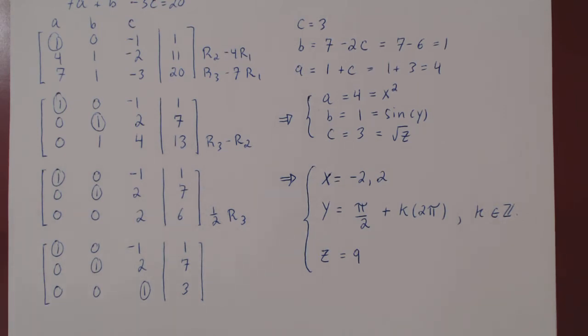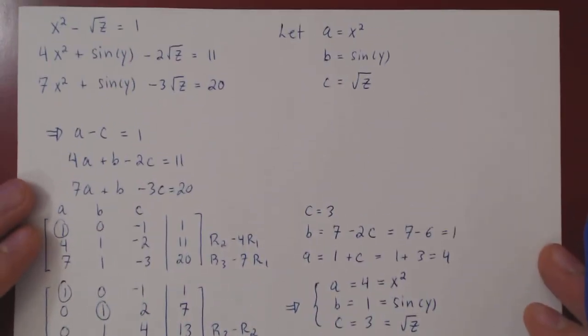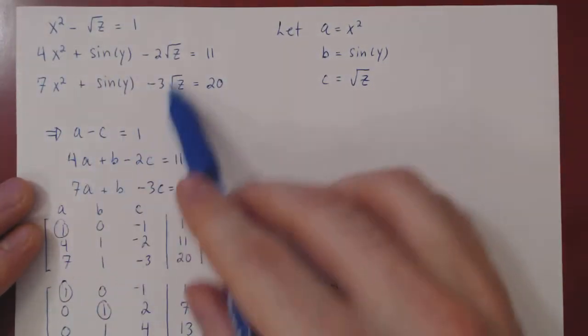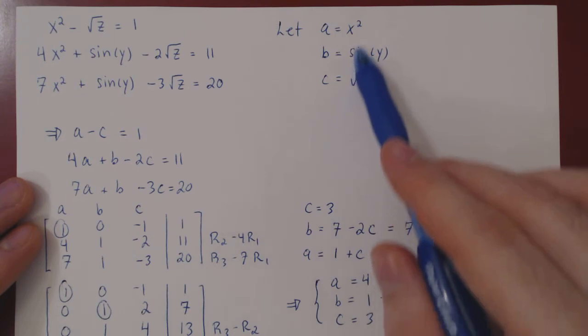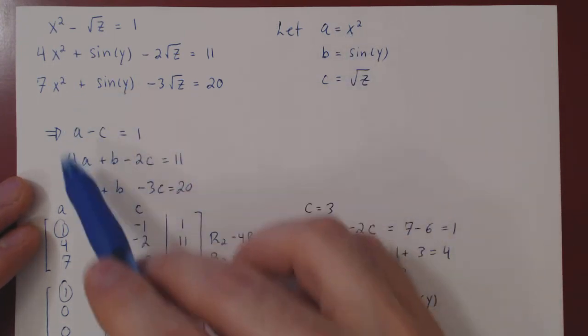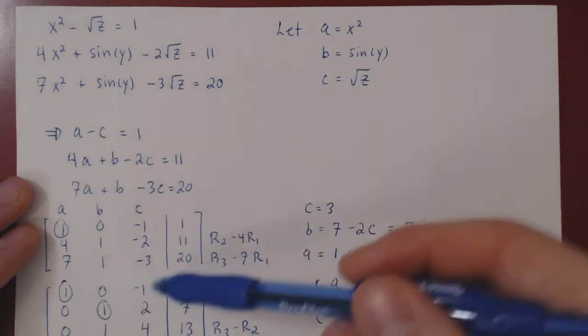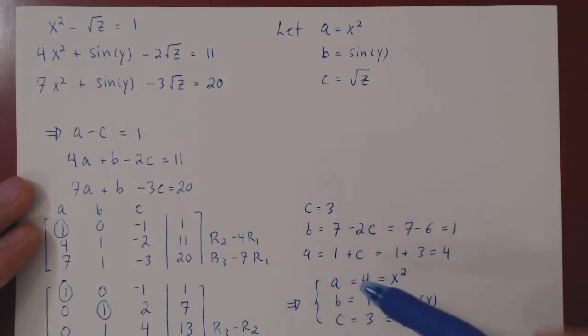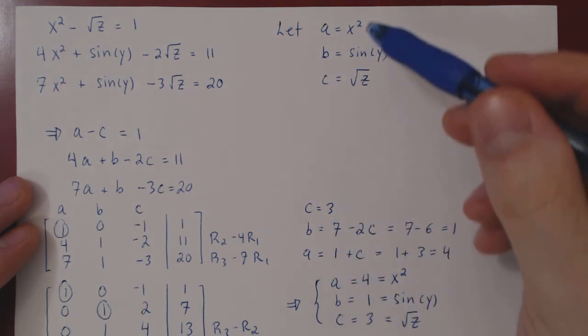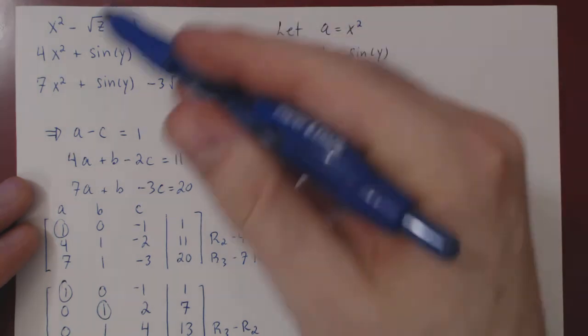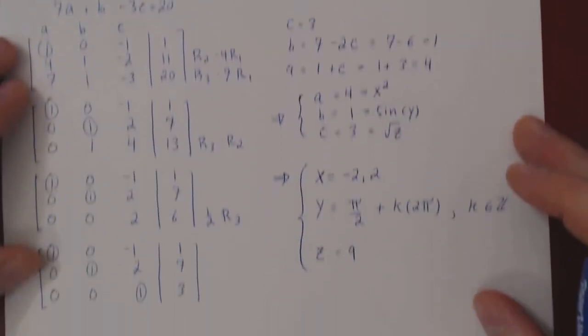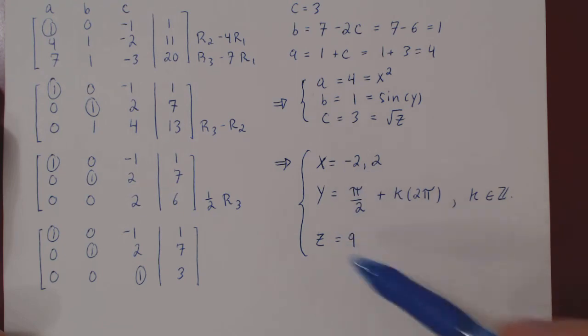So keep in mind that even though sometimes the system may be non-linear, there may be a way to make a change of variables so as to make it become a linear system. This you can solve using row reduction, and hopefully afterwards you can solve for the original variables from the non-linear systems. And this was such an example.